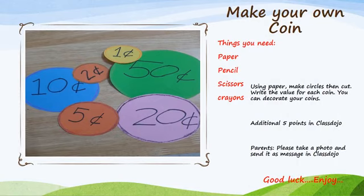Now kids, it's activity time. So this time, you will make your own coins. Before you start, these are the things that you need. So you need paper, pencil, scissors, colors or crayons. To make this activity, using paper, it can be white paper or colored papers, make circles, then cut. Write the value for each coin. You can decorate your coins. You can draw pictures or borders. Be creative in making your coins. And did you know you can use these coins in playing with your brothers or sister? Of course. But before you play with the coins, make sure to ask your parents to please take a photo and then send it as message in ClassDojo so that I can give you five additional points. I hope that you enjoy doing this activity. Good luck!